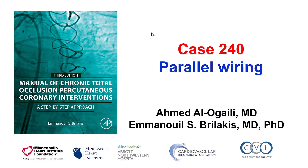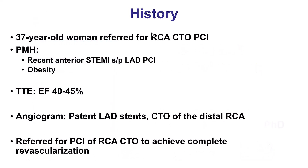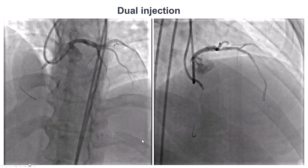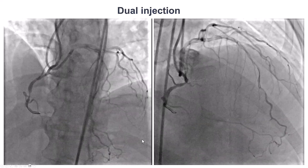This is Ahmed Alogaili and Manos Brilakis, presenting case 240 for the Manual of CTO Interventions. This is a case illustrating use of the parallel wiring technique. The patient was a young woman who presented with anterior ST elevation myocardial infarction, successfully stented, had mildly reduced ejection fraction, and was found to have a CTO of the right coronary artery, and was referred for staged PCI to achieve complete revascularization.